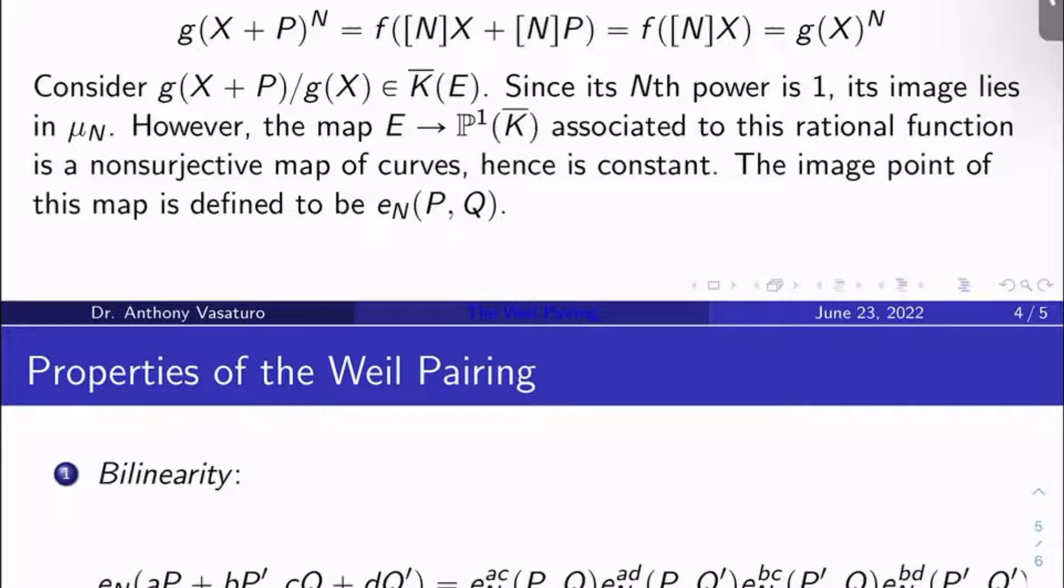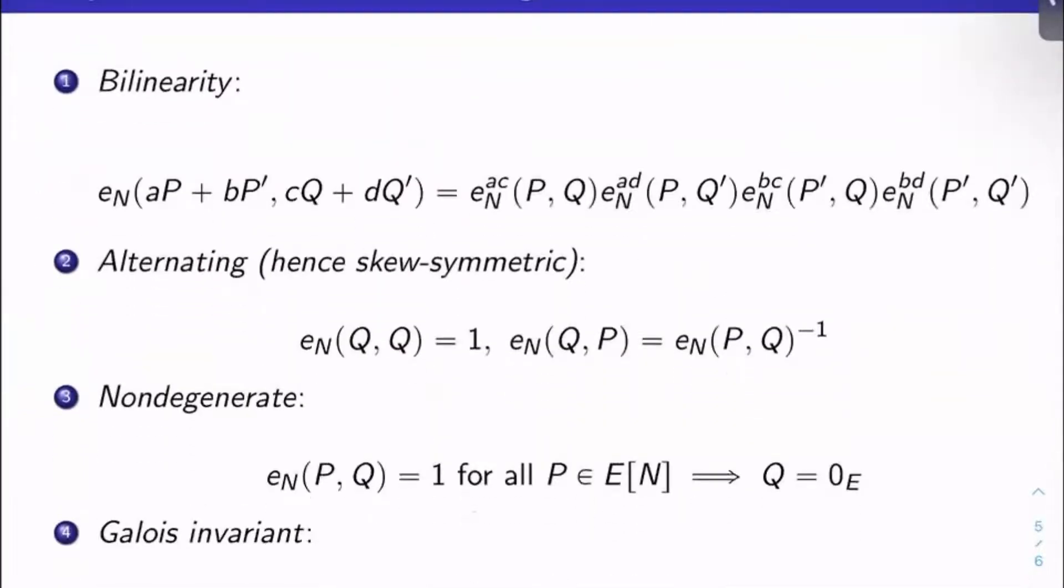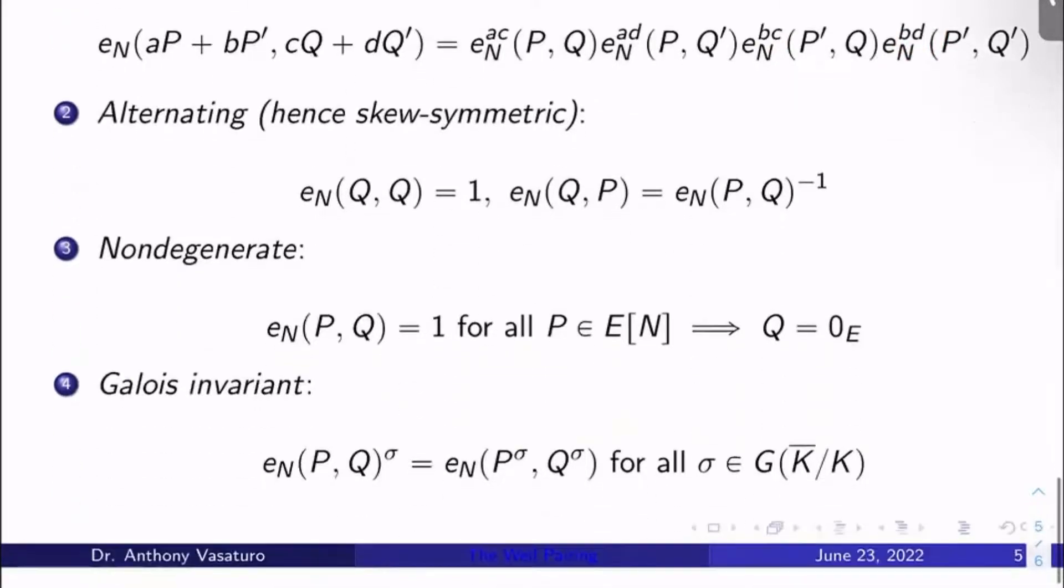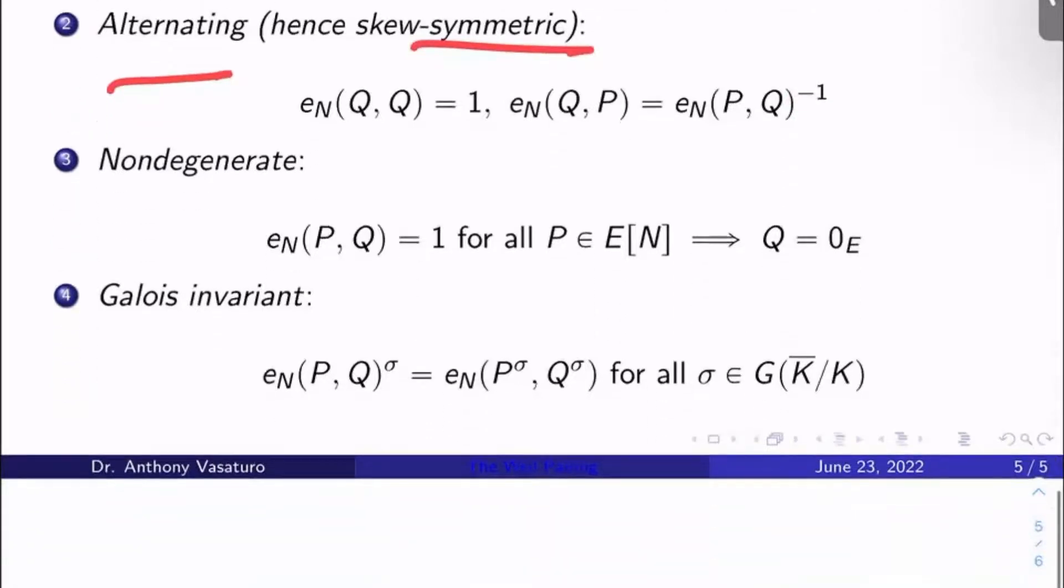Okay, who cares? I mean, what kind of properties does this have? Well, first of all, it's bilinear. If I do e_N of aP + bP′, cQ + dQ′, that's just e_N(P,Q) to the ac power times e_N(P,Q′) to the ad power times e_N(P′,Q) to the bc power times e_N(P′,Q′) to the bd power. So we have bilinearity. It's also alternating and so automatically skew symmetric. In other words, e_N(Q,Q) is always one. And so e_N(Q,P) is e_N(P,Q) to the negative first. So that's the alternating and skew symmetric.